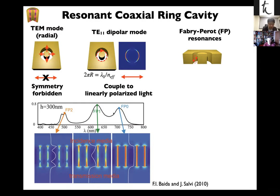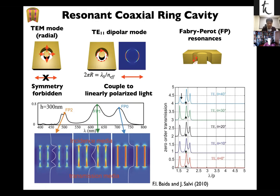The zero-order resonance has a uniform field and constant phase along the vertical axis, making it efficient for light-matter coupling experiments with materials in the cavity. This mode is also insensitive to the incidence angle of light — as we change incidence angle, the resonance frequency remains the same. Compared with a planar Fabry-Perot cavity, this is a nice feature since the coaxial cavity can be more robust against misalignment and when using a focused beam illumination.